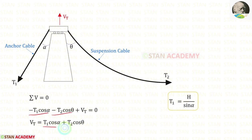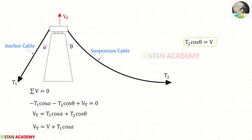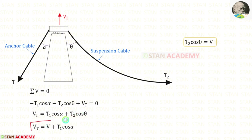So both of them will be positive. We know that T2 cos theta is the vertical component — that is the vertical reaction due to the loads. So instead of T2 cos theta we can apply V. This is another expression for Vt.